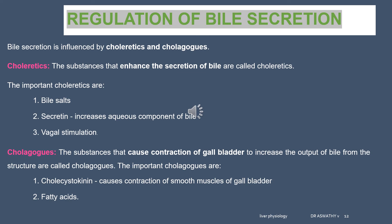Next is regulation of bile secretion. Bile secretion is influenced by choleretics and cholagogues. Choleretics are substances that enhance secretion of bile. Cholagogues are substances that cause contraction of the gallbladder. Important choleretics include bile salts — bile salts in the blood stimulate parenchymal secretion of bile — and secretin, which stimulates the aqueous component of bile. Vagal stimulation also causes weak contraction of the gallbladder and some increased secretion from the hepatocyte. The main two cholagogues are cholecystokinin (a hormone) and fatty acids — both act as cholagogues for contraction of the gallbladder.